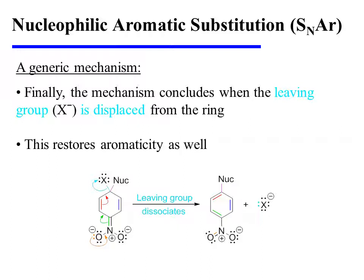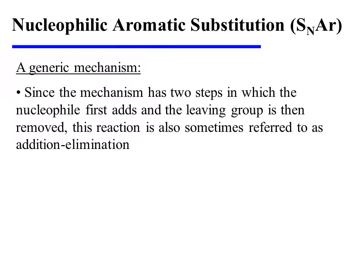Finally, the mechanism concludes when the leaving group is displaced from the ring. This also happens to restore aromaticity to the ring, leaving us with the SNAr product. This mechanism is also sometimes referred to by a different name. Since the mechanism has two steps in which the nucleophile first adds and the leaving group is then removed, this reaction is also sometimes called addition-elimination.